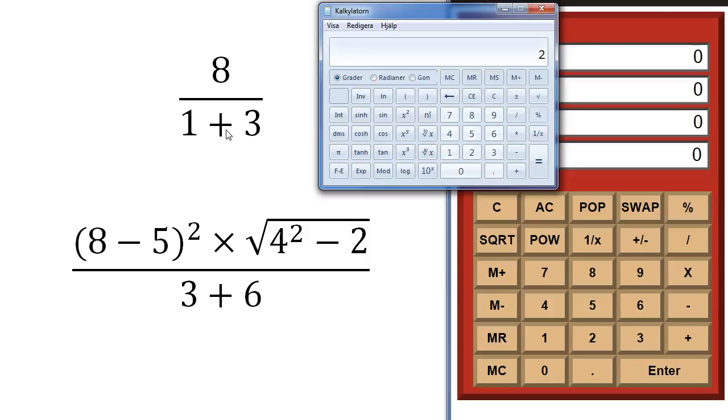So let's look at this simple expression here, 8 divided by 1 plus 3. And we start by using an algebraic ordinary calculator. And obviously we can't just enter the numbers like this, 8 divided by 1 plus 3 equals, because then you get 11, because it will start by dividing 8 by 1 and then add 3. But what you would like to do here is to add these two first and then divide 8 by the sum of these.